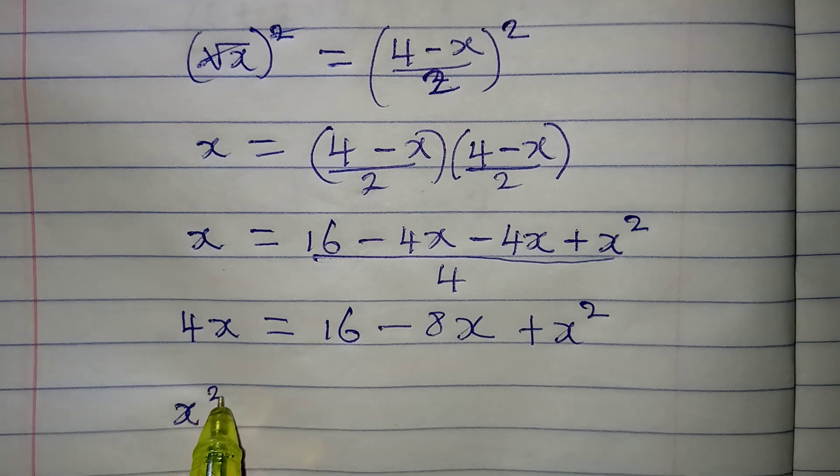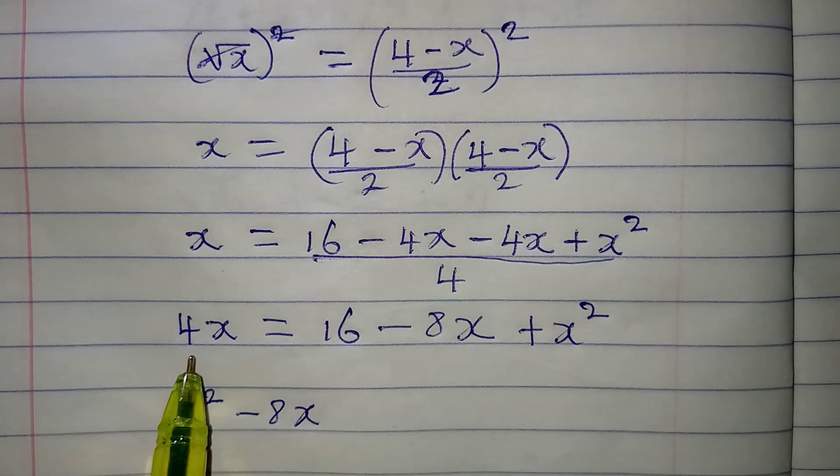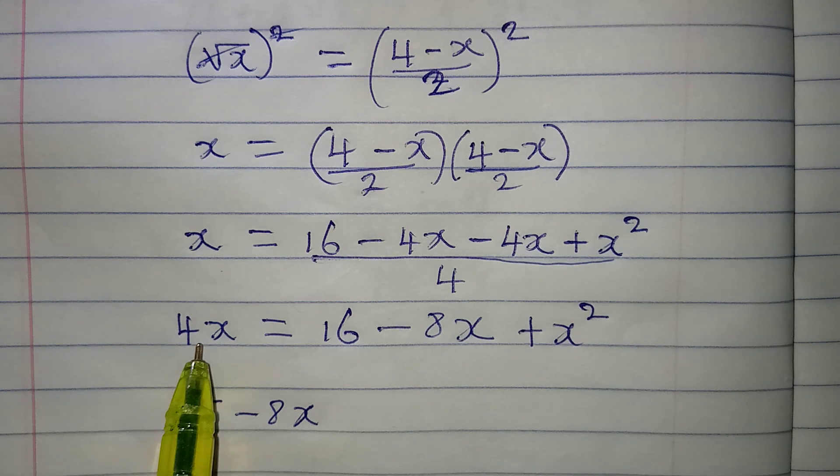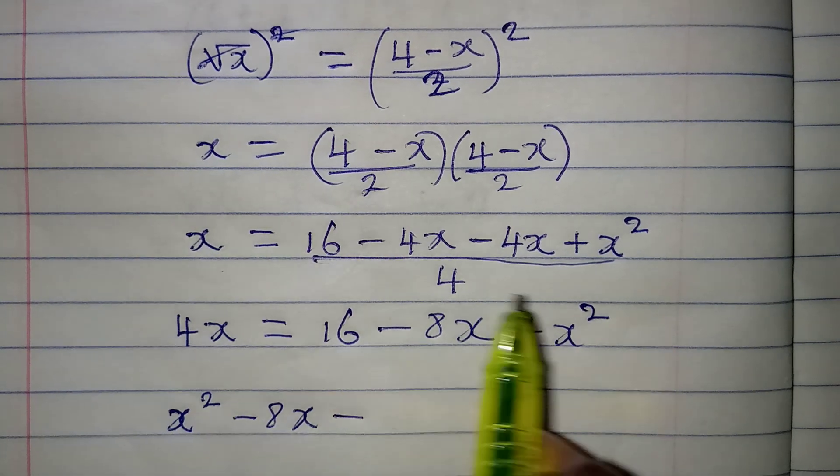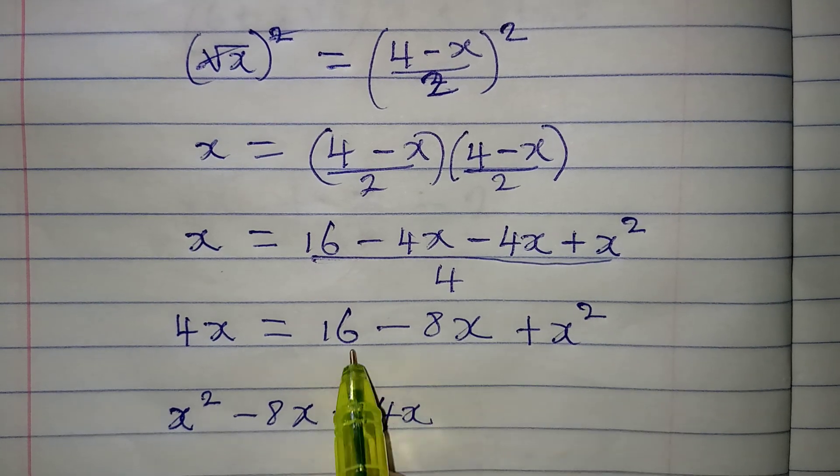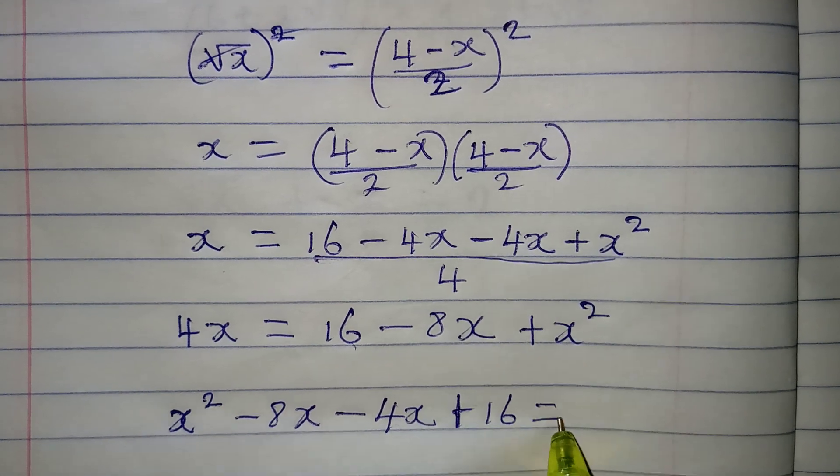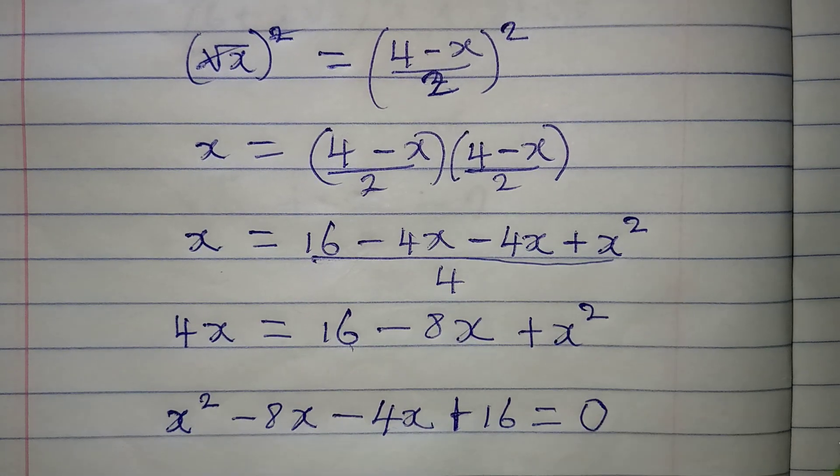From here, let's arrange it very well. I want to pick x squared first. This is minus 8x, and then here we have 4x. Since it's coming to meet with the others, it will become negative 4x. Then this plus 16 will appear, and everything is equal to 0 now.